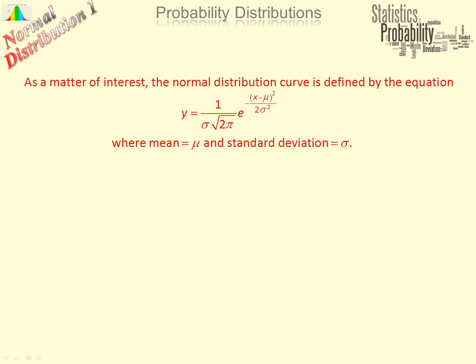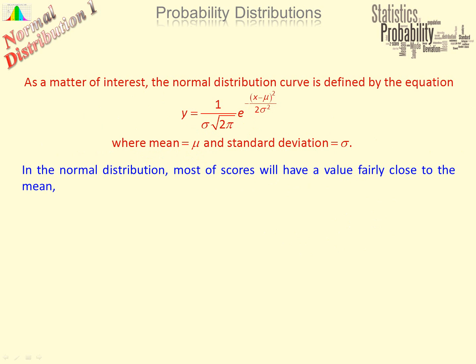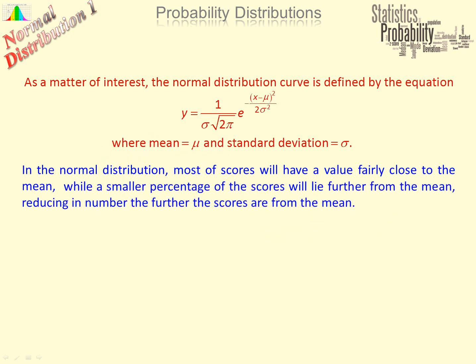As a matter of interest, the defining equation for the normal distribution curve is shown here, where mu — the Greek letter mu — represents the mean of the distribution, and the Greek letter lowercase sigma represents the standard deviation. Most of the scores will have a value fairly close to the mean, thus the bunching towards the centre, while a smaller percentage of scores will lie further from the mean, reducing in number the further scores are from the mean.